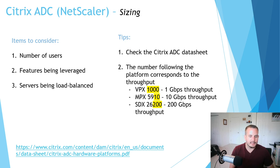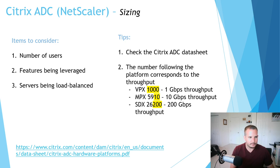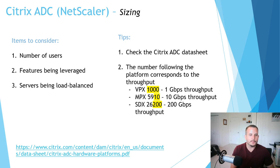We need to look at the features being leveraged on the ADC — if we're leveraging features like Web App Firewall, that adds a level of utilization on top of what's available in your appliance. And then the servers being load-balanced: if you're load-balancing Exchange servers, there's a throughput requirement for that. My rule of thumb is to check the ADC data sheet — I'll include that in the notes below.